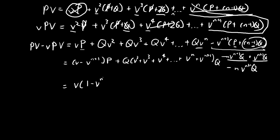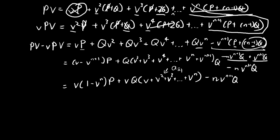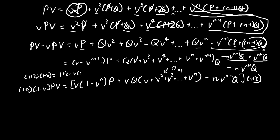Factorizing a V from the series gives V + V² + V³ + ... + V^N, which is the annuity-immediate a-angle-N. On the left-hand side, we have (1 minus V)·PV. Multiplying both sides by (1+i): since V·(1+i) equals 1, the expression (1+i)·(1-V) simplifies to i. So the left side becomes i·PV.